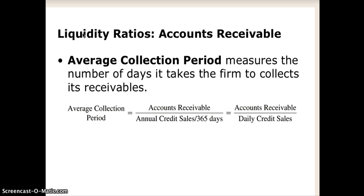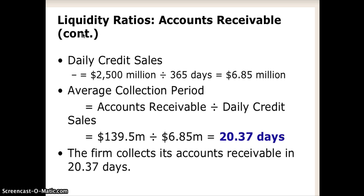What this tells us is how many days before we're able to collect the accounts receivable coming in. The way you calculate it is: take the annual sales done on credit, divide that by 365 to get a per-day credit sales rate, and then divide that into the accounts receivable total on the balance sheet. In this example, that gives approximately 20 days to collect accounts receivable.